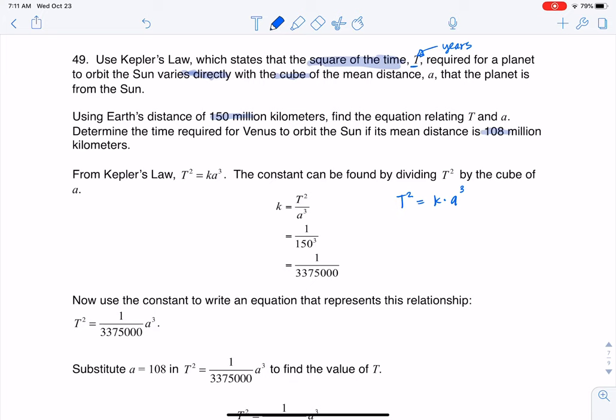Now the complete ordered pair that they gave us here is that we had a distance for, at least for Earth, of 150 million, and it took one year to get around the sun. So I'm going to plug that in here, I'll get 1 squared is equal to K times 150 cubed. And so if I solve for K here, I'm getting K is 1 over 150 cubed.